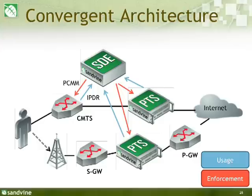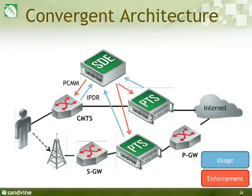To close with a few use case examples: the Sandvine quota manager being used in a convergent architecture. If we assume a use case where Facebook traffic is zero-rated, there needs to be a way to first identify that over-the-top application. PTSs on each access segment add and report usage to the service delivery engine, which holds the quota offline and maintains the usage count for the Facebook rating group. It also sends back appropriate enforcement directives to the Sandvine PTS and third-party elements — for example, PCMM enforcements for setting gates on the CMTS on the cable segment. The SDE also has the ability to ingest usage information via IP data records and reconcile that with counts from the PTS.